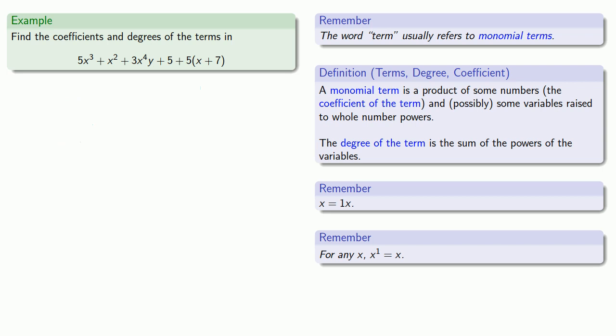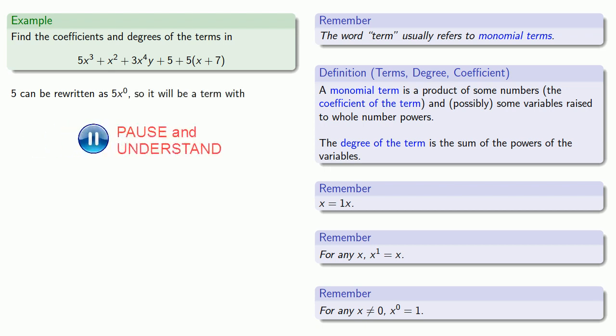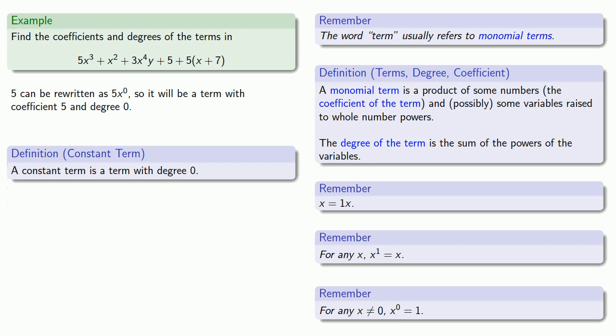The next thing is 5. Here another rule of exponents is helpful to remember. For any x not equal to 0, x to power 0 equals 1. So this means 5 can be rewritten as 5x to the 0. And since 0 is a whole number, this is now a product of a number and some variables raised to whole number powers. That means 5 by itself is also a term. The coefficient is the number 5, and the degree is the exponent 0. This brings up a useful definition. 5 is a constant. It has no variable parts to it. So we define a constant term to be a term with a degree of 0.